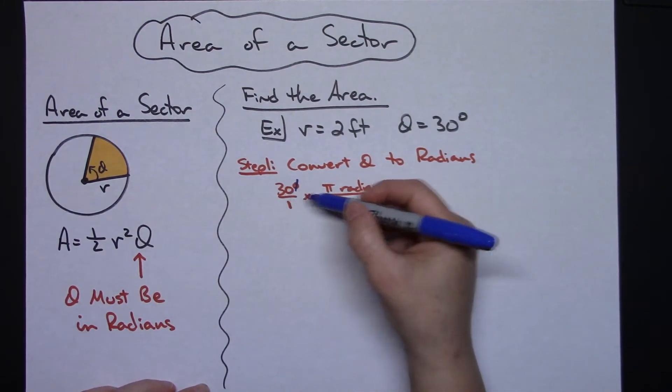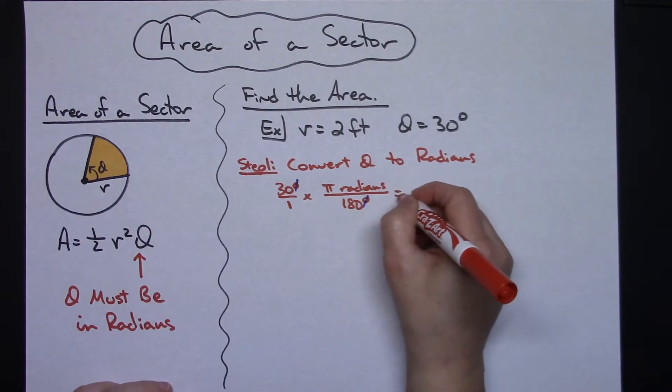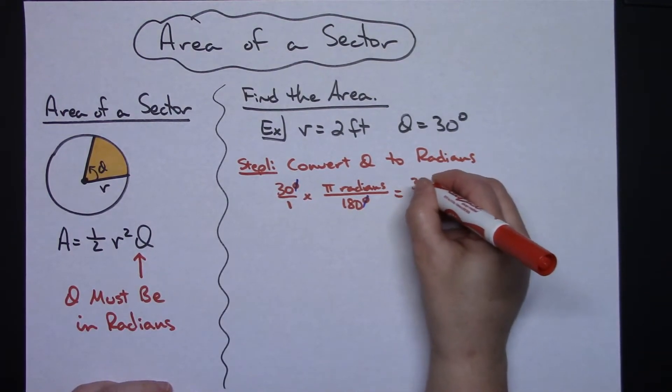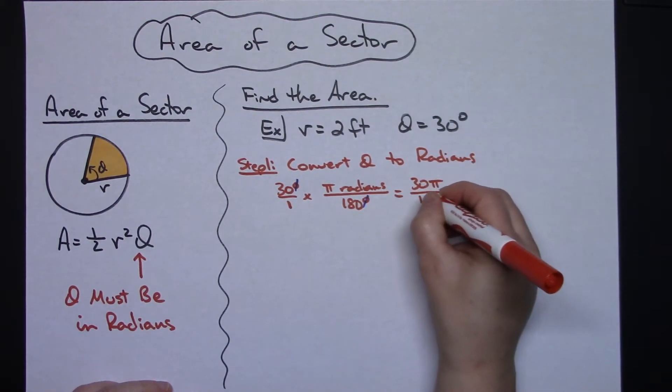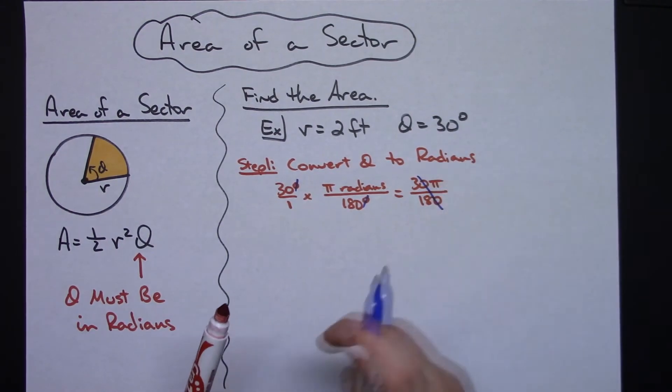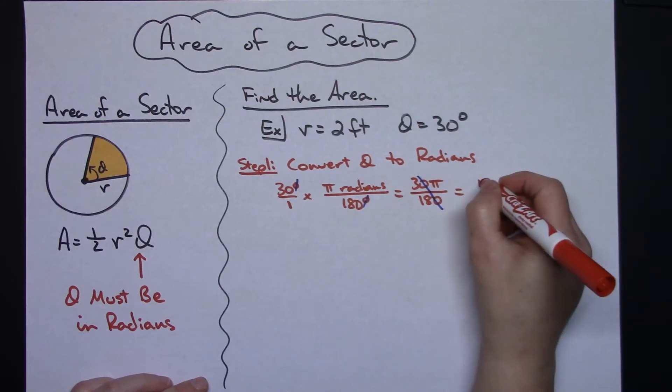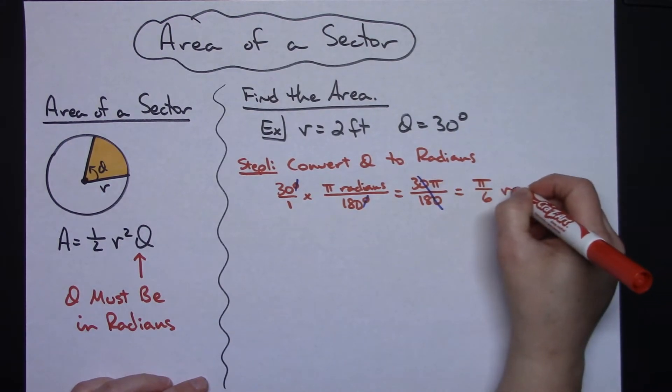I've got 30 pi radians over 180, and you should always reduce that, so I'm going to have 30 pi over 180 and then those zeros are going to cross out, and then I can still reduce the 3 over 18 so that I end up with just pi over 6 radians.